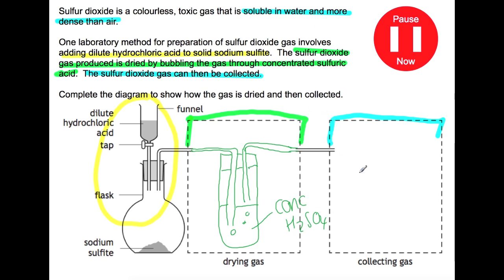From there we then need to collect the gas. We can either use a gas syringe or we can do upward displacement of air. So that's the one that I'm going to draw here. So you'll have a tube going down the way into a boiling tube and then you would just stopper that off.